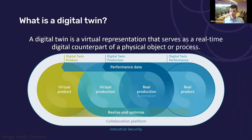A key aspect of digital twin systems is that they are constantly fed with new data from a real-world counterpart. The real-world part, machine, or manufacturing process regularly updates its virtual counterpart through its lifecycle so that the twins can evolve together.